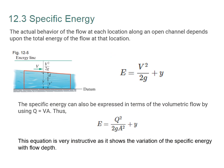The actual behavior of the flow at each location along the open channel depends upon the total energy of the flow at that location. We can write the energy equation as the sum of kinetic energy V²/2g plus Y, the potential energy. Specific energy can also be written in terms of the volumetric flow rate using Q equals V times A. Substituting gives the specific energy equation, which shows the variation of specific energy with flow depth.